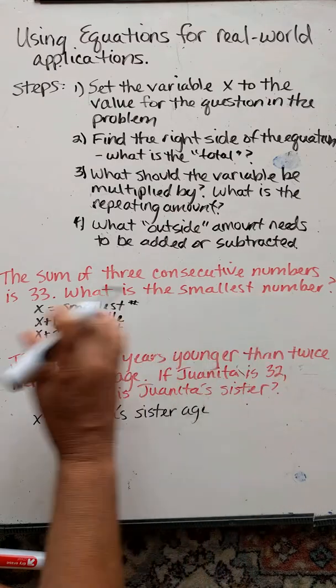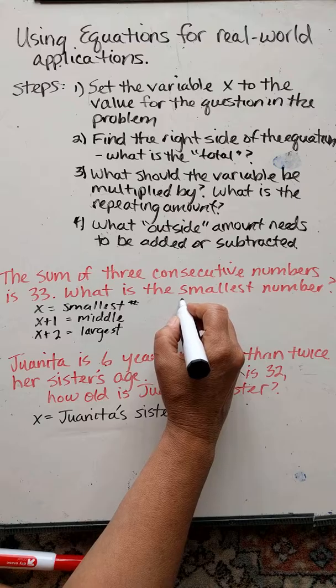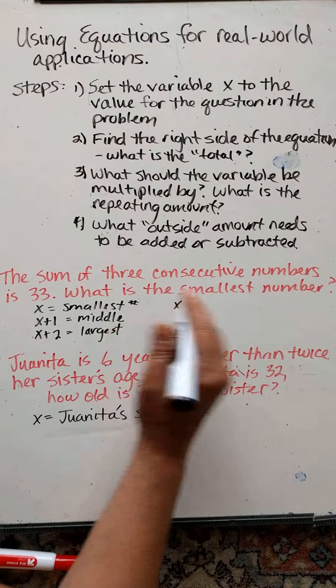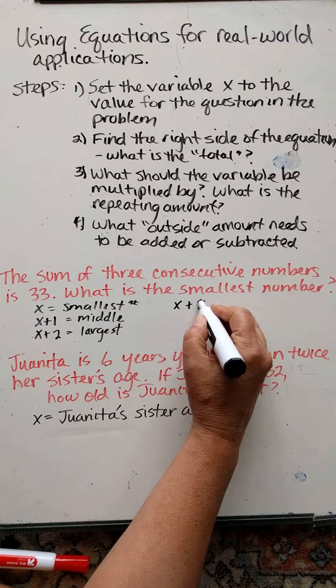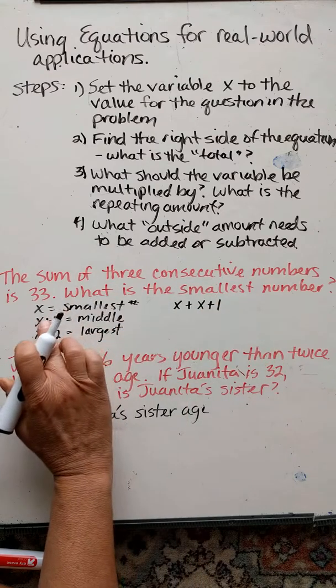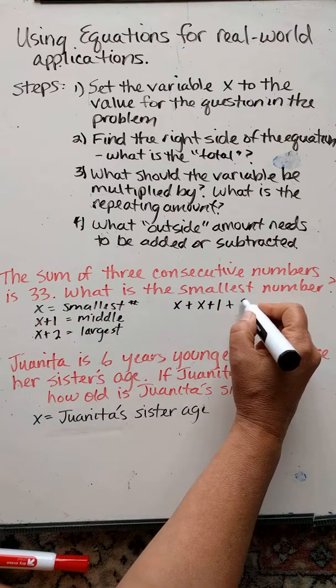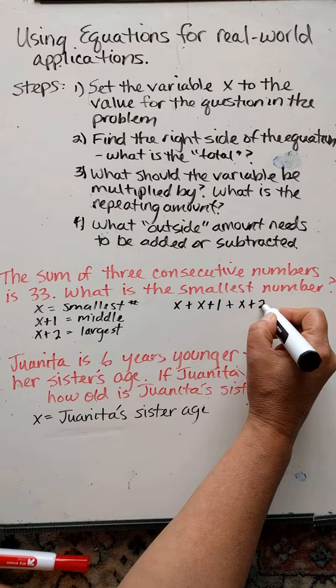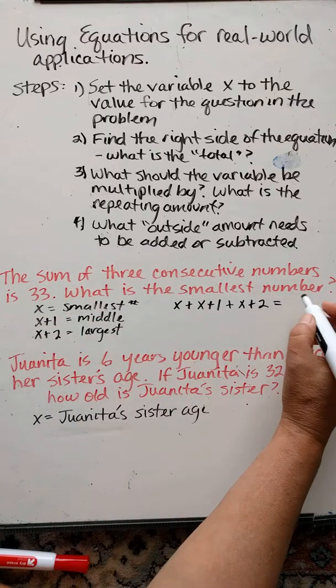And now I can put it in an equation. I just have to add all of them up. So I say x, which is the smallest, plus x plus 1, which is the next one, plus x plus 2. And the total of 33.